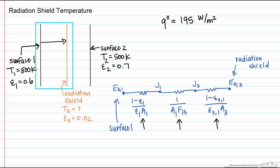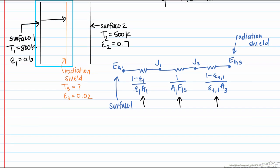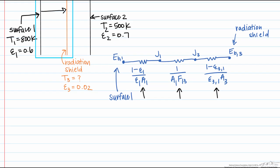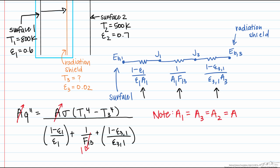So now we can write this as our flux is equal to our Stefan Boltzmann constant times T1 to the fourth minus T3 to the fourth divided by the sum of the resistances. So here we know what our heat flux is, and what we're trying to find is this temperature here.